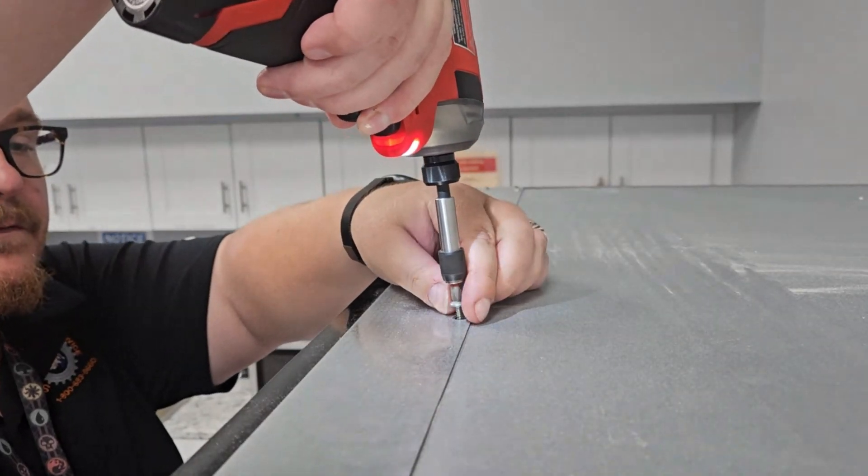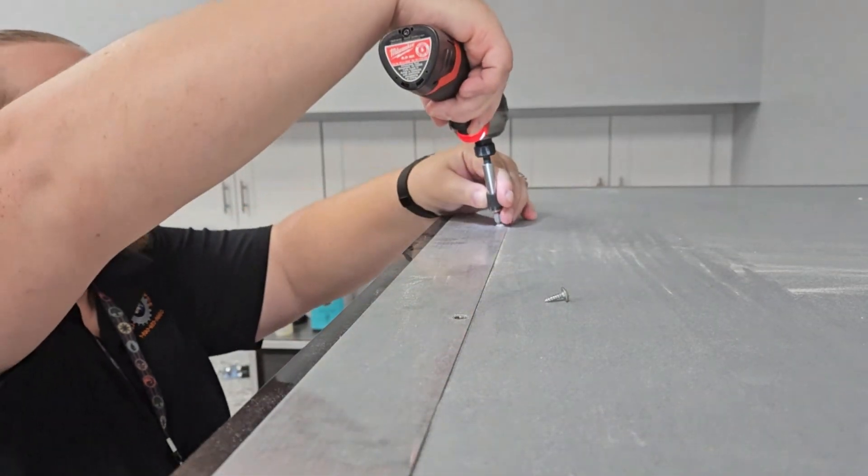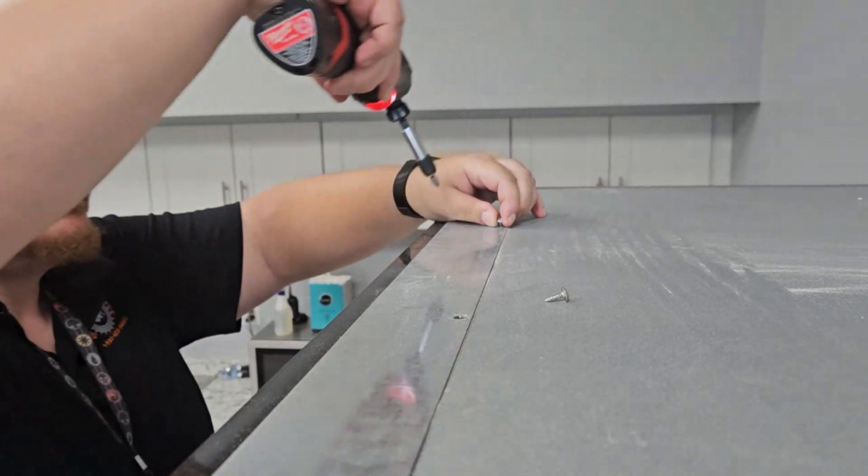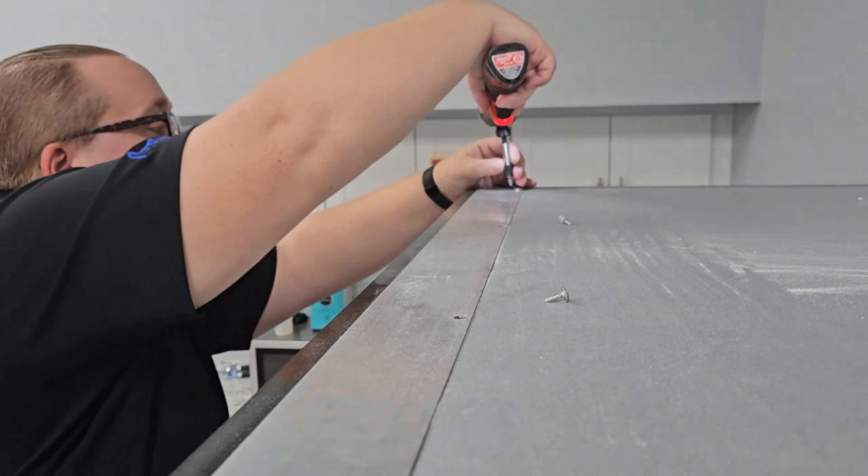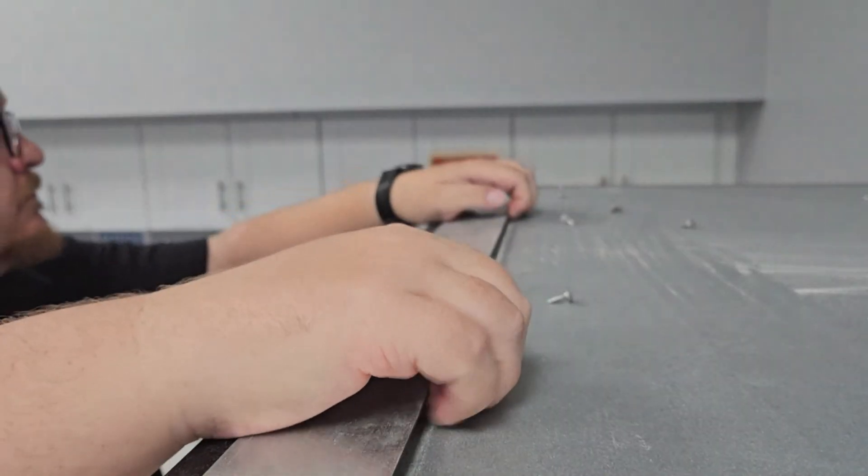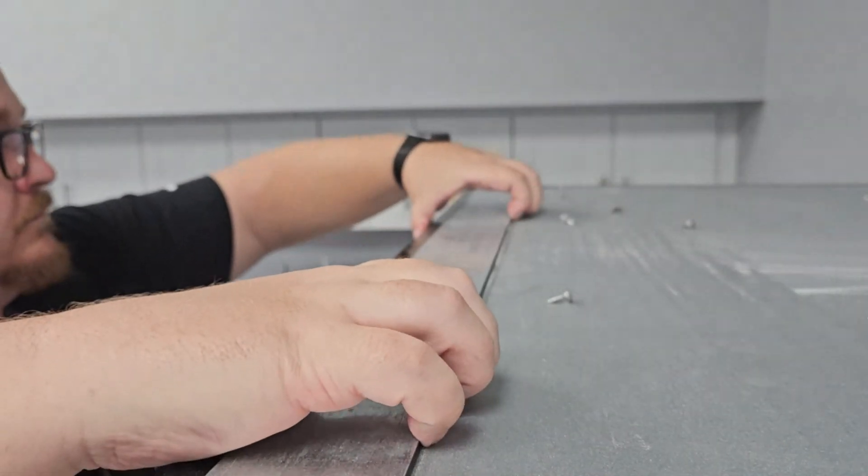To remove the banner from the thin style banner frame, begin by removing the screws out of the top cap of the banner frame. Once all of the screws are out you can remove the top cap.